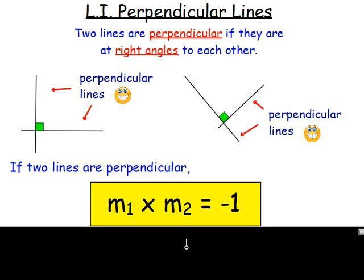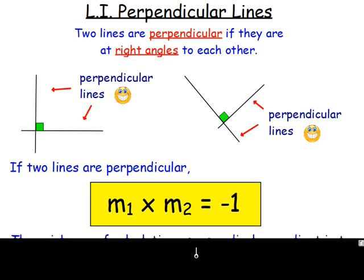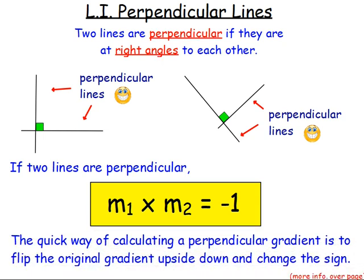So how does that help us? Say you had two lines that were perpendicular and you knew the gradient of one of them — you can easily work out the gradient of the other. The quick thing to remember is: to calculate a perpendicular gradient, flip the original gradient upside down and change the sign.